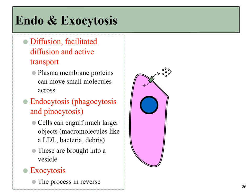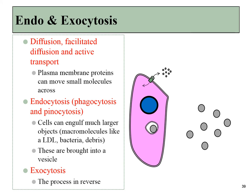Endocytosis and exocytosis involve the movement of large numbers of molecules all at once, but not across the plasma membrane. Instead, molecules are engulfed into an organelle such as a vesicle. Exocytosis is that process in reverse — a large organelle fuses with the plasma membrane and everything found inside it exits the cell.